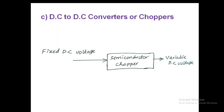The third type of converter is DC to DC converters or choppers, designed with power semiconductor devices. If the supply voltage is fixed DC voltage and you need variable DC voltage, you use a DC to DC converter or chopper to obtain that variable DC voltage.